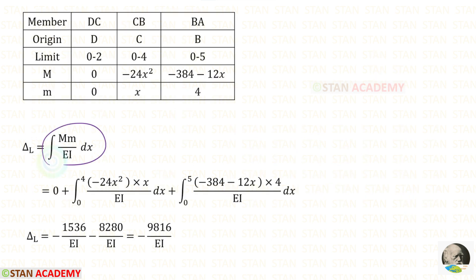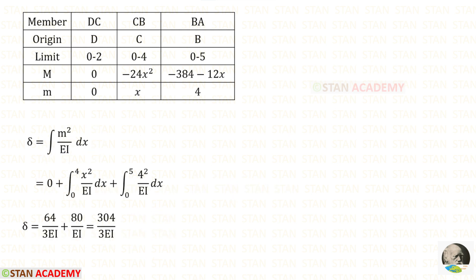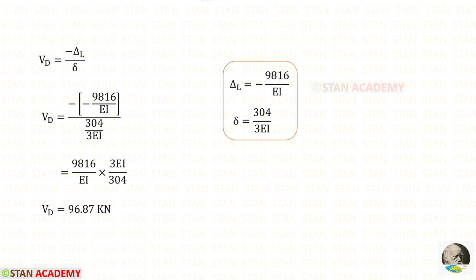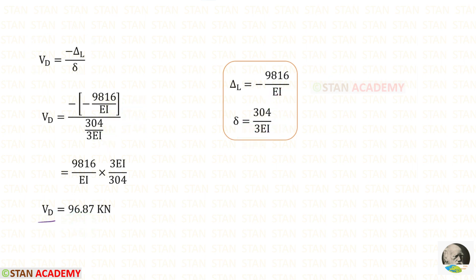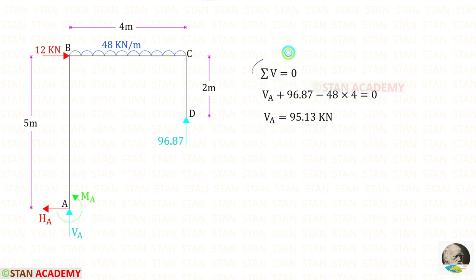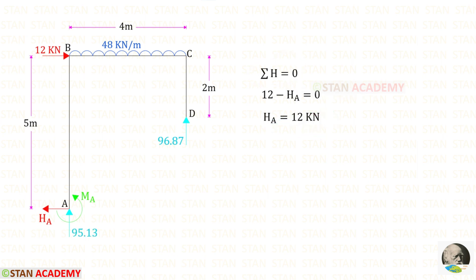Using the appropriate formula we can find delta_L, and using the other formula we can find delta. Applying the values of delta_L and delta in the formula for VD, we will get VD = 96.87 kN. By applying the equilibrium rules we can find VA, and then we can find HA.